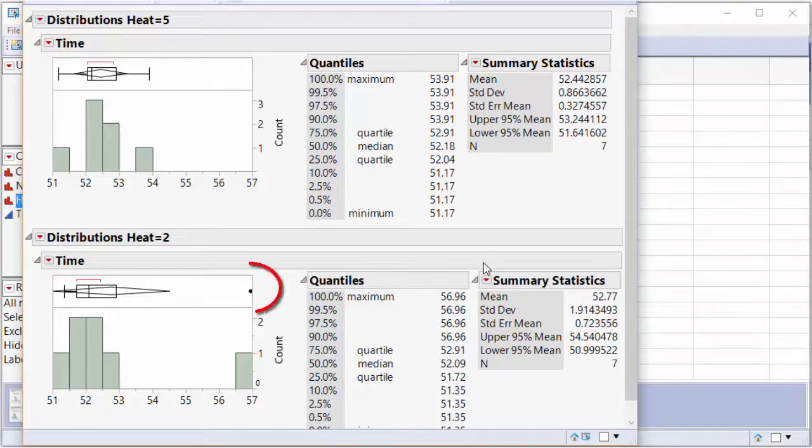If you'll notice, the data does have an outlier for heat 2. This person was a lot slower than all the other runners. So we are going to fail to meet the nearly normal condition. Normally distributed data should not have someone this far away. They are definitely an outlier. So let's go back and check our assumptions.